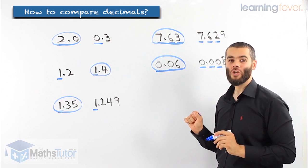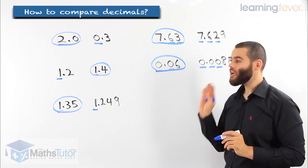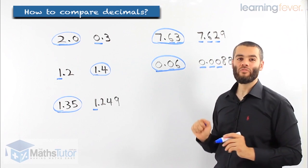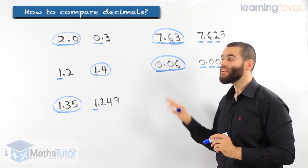So, that's a quick way of showing how to compare decimals. We look through the place values and we find which one is larger. Very easy. Straight to the point.